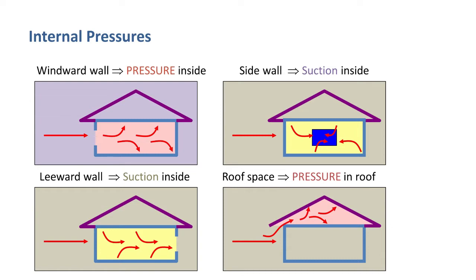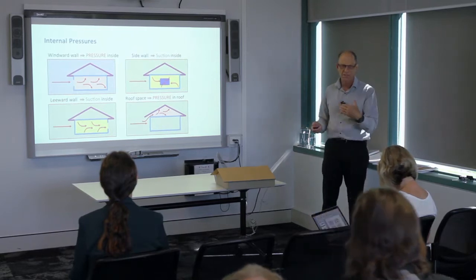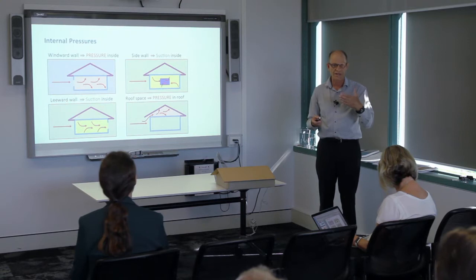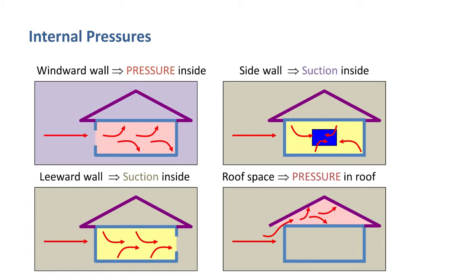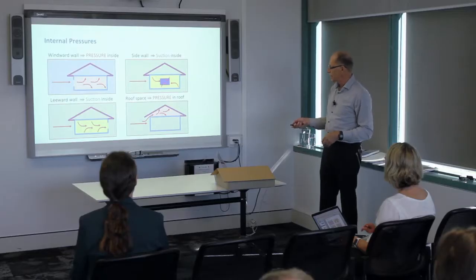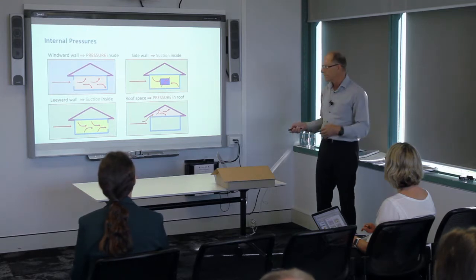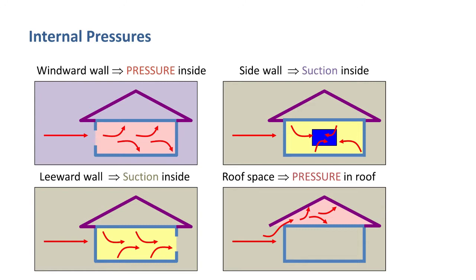Another complication is if we've got an opening in the external envelope. If there is an opening, air can come in and we get the external pressure that was on that surface now on the inside of the house. If we've got an opening in a windward wall it pushes air into the house, giving us the same pressure that was on that windward wall on the inside. In a tropical cyclone, if an opening develops in the front half and then wind comes from a different direction, that opening may be on a leeward or side wall, meaning the inside of the building is under suction.